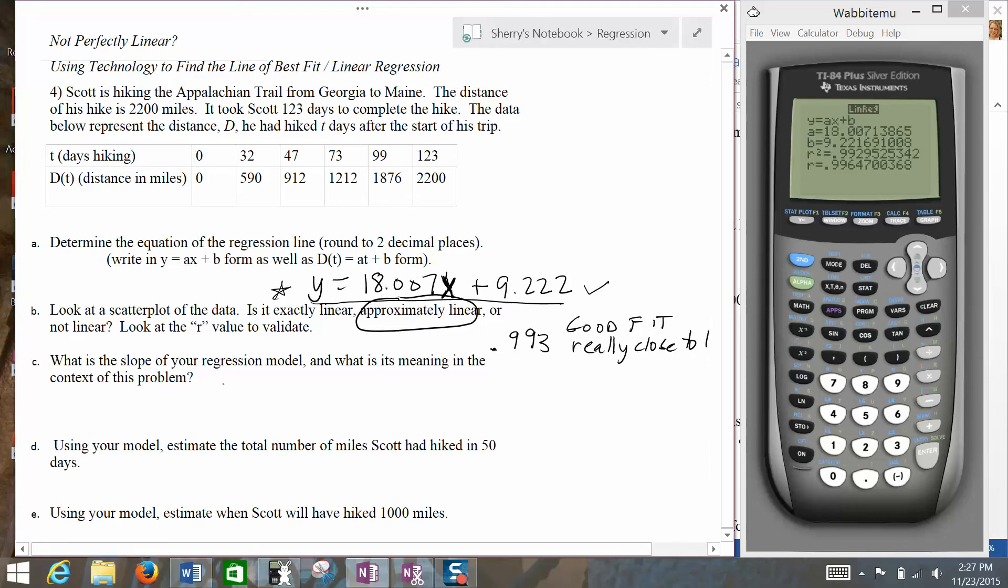Part C asks what is the slope of our regression model? Well, remember the slope is always the value in front of the X. So here, our slope is 18.007, and it should relate to some kind of rate of change of what's going on.